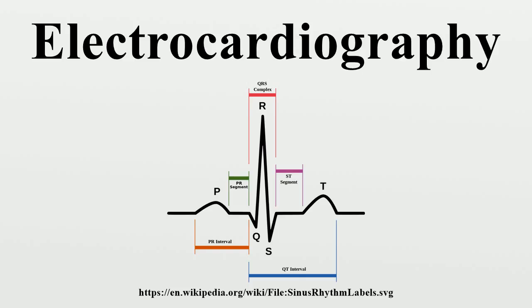Reasons for performing electrocardiography include: suspected heart attack, suspected pulmonary embolism, a third or fourth heart sound, a cardiac murmur or other findings to suggest structural heart disease, perceived cardiac dysrhythmias, fainting or collapse, seizures, monitoring the effects of a heart medication, and assessing severity of electrolyte abnormalities such as hyperkalemia.